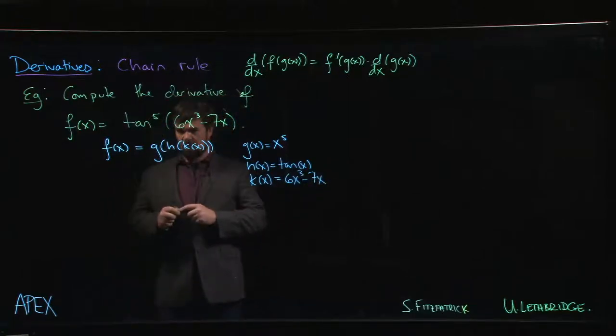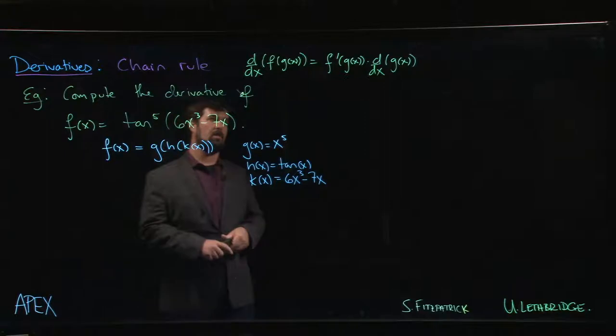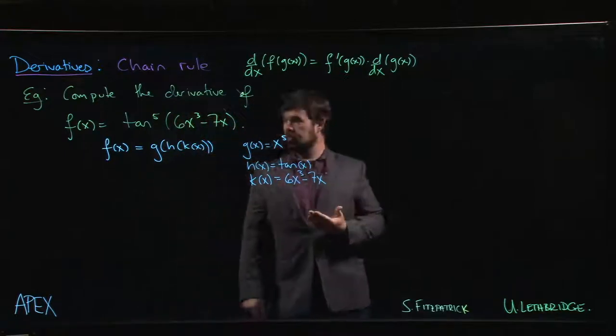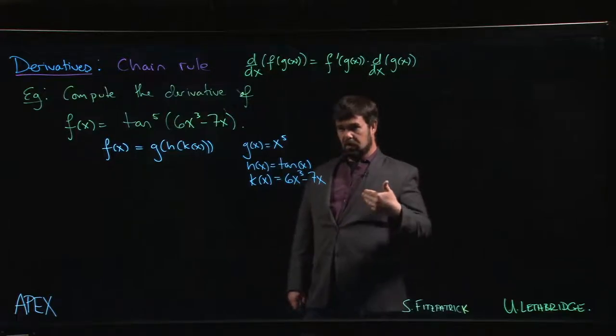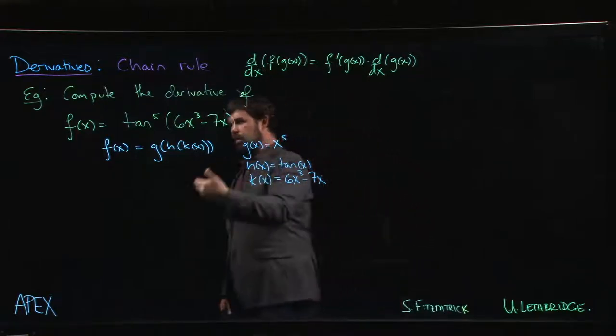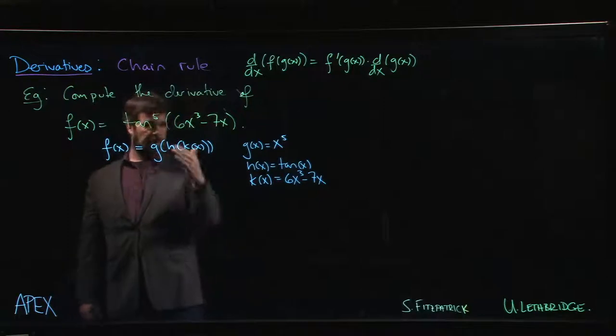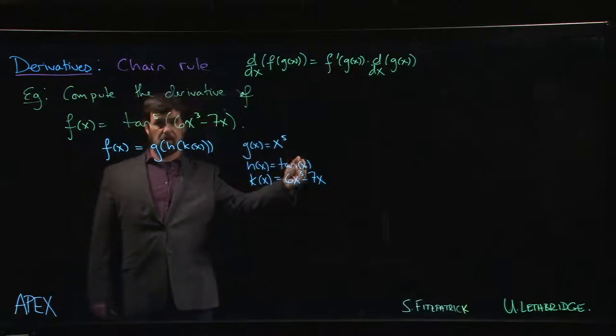These examples with three or more functions illustrate where perhaps the chain rule gets its name, because when you want to take the derivative, you have this sort of recursive process. You get this chain reaction where you apply the derivative recursively starting on the outside and working your way in.